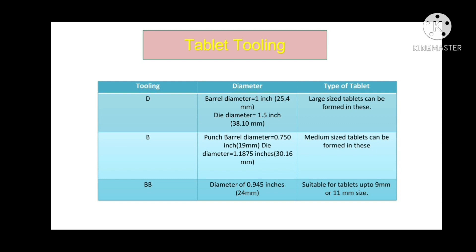Next, B tooling: punch barrel diameter is 0.75 inches and die diameter is 1.18 inches — medium size tablets can be formed with this. Last, BB tooling: diameter of 0.9 inches, suitable for tablets up to 9 mm or 11 mm in size.